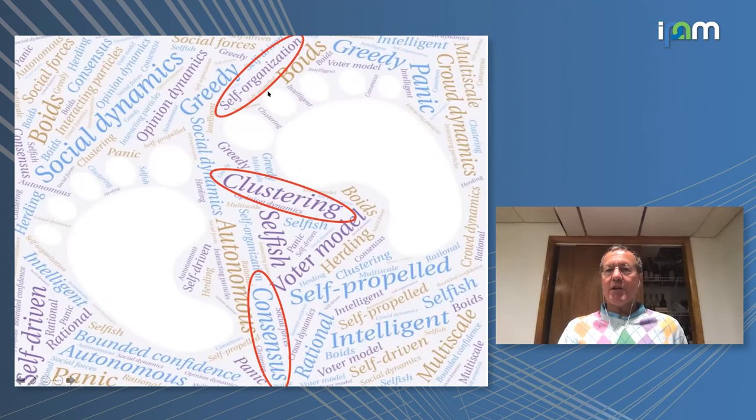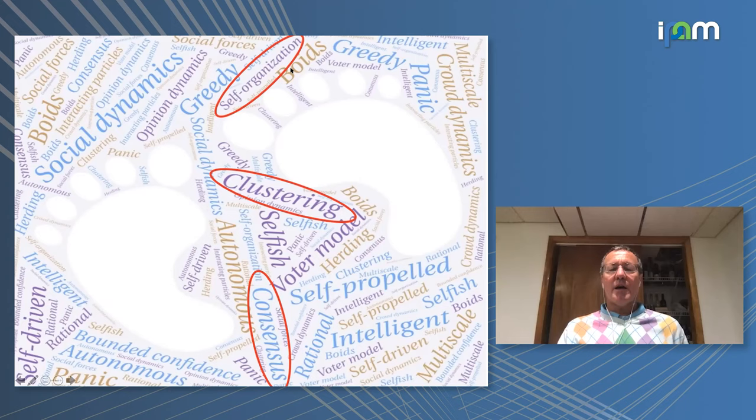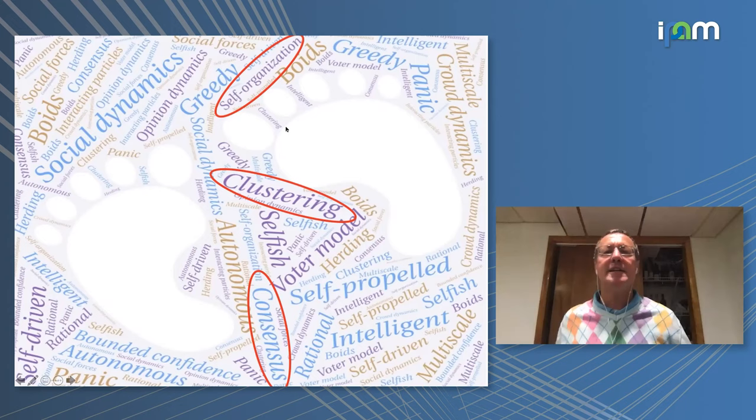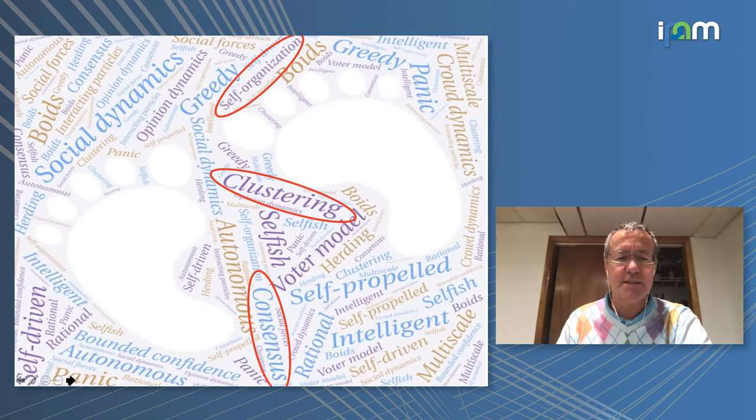Continuing the keywords: consensus means all agents coalesce to a unique point or opinion. Clustering, as we saw in Hegselmann-Krause, means a finite number of points where all agents converge. More generally, self-organization means interesting group structure stemming from simple interaction rules.